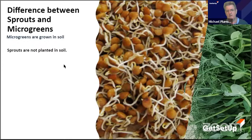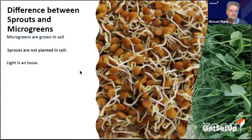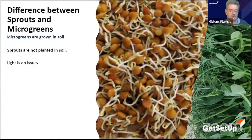Sprouts are not grown in soil — we've all sprouted before in bottles in water, kept damp and aired. Light is an issue with microgreens. The green leaves tell you something: the microgreen is getting extra nutrients over and above the sprout from the light.